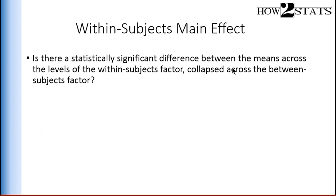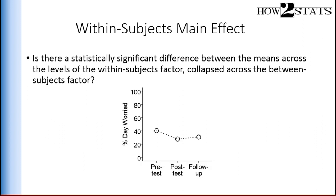The within-subjects main effect answers the following question: is there a statistically significant difference between the means across the levels of the within-subjects factor, time, collapsed across the between-subjects factor? That means irrespective of whether a person was in the CBT group or the discussion group therapy. This is what the plot of means looks like — at pre-test, this is the anxiety level, which is the mean across CBT and discussion group therapy collapsed into one mean. Then post-test and follow-up. These means represent the within-subjects main effect.